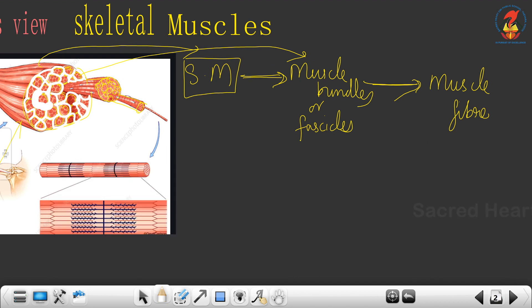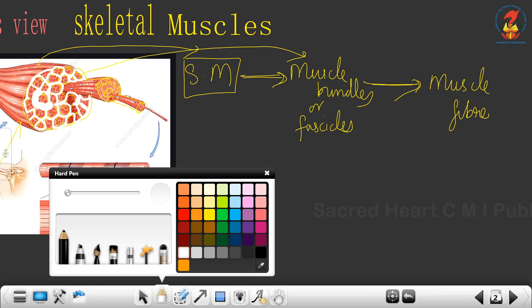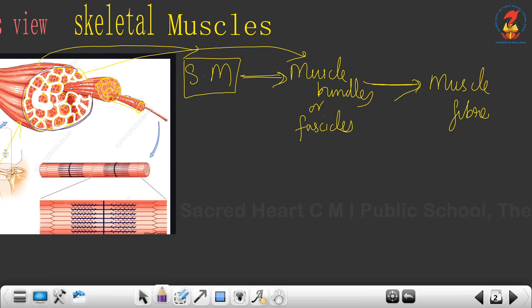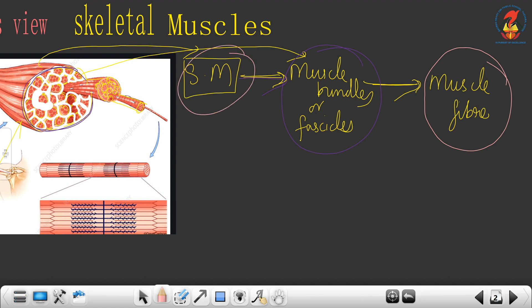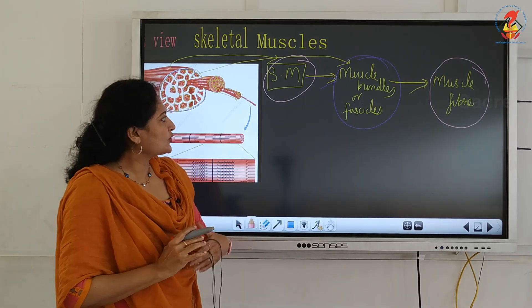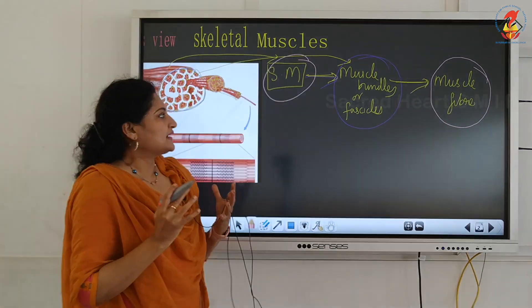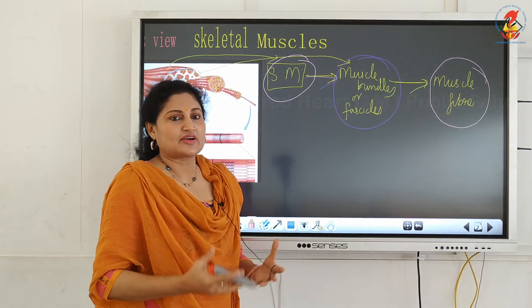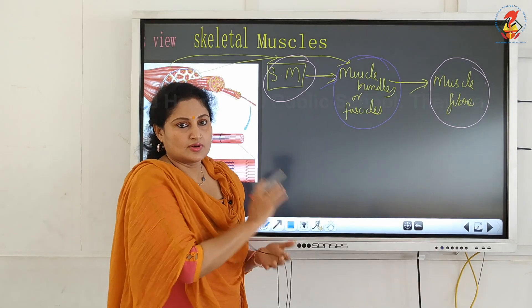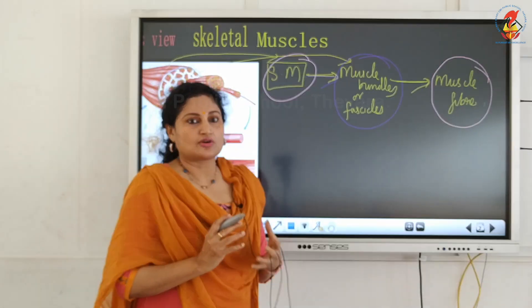This can be observed in cross section. Once again reiterating the hierarchy: in the skeletal muscle cross section you can see a bundle of muscle bundles arranged together, and in cross section they appear to be circles. These are called muscle bundles or fascicles. The fascicles in turn comprise a number of muscle fibers. Skeletal muscles comprise a number of muscle bundles or fascicles, and muscle bundles or fascicles comprise a number of muscle fibers, which are the structural and functional unit of the skeletal muscle.